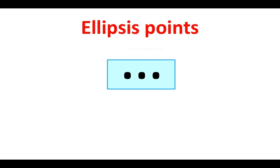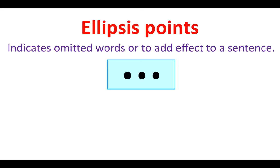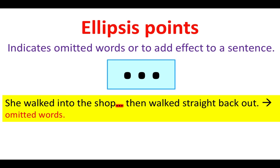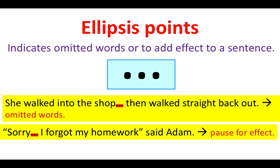Ellipsis points. Ellipsis points indicate omitted words or are used to add effect to a sentence. For example: She walked into the shop... then walked straight back out. This is an example of where words have been omitted. 'Omitted' means when words have been taken out of the sentence. "Sorry... I forgot my homework," said Adam. This sentence shows us where ellipsis points have been used to create a pause for effect.